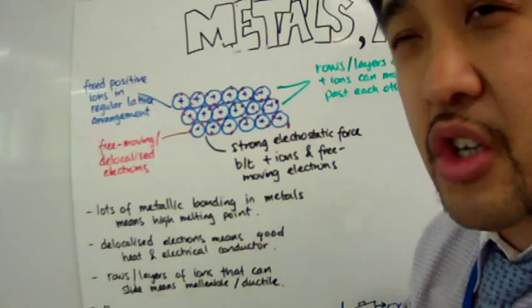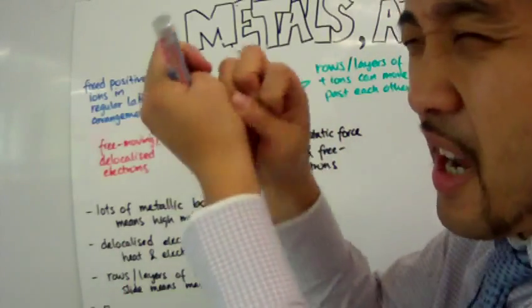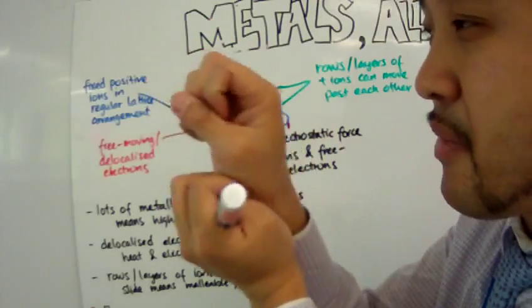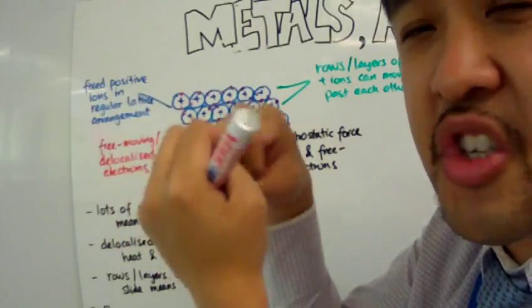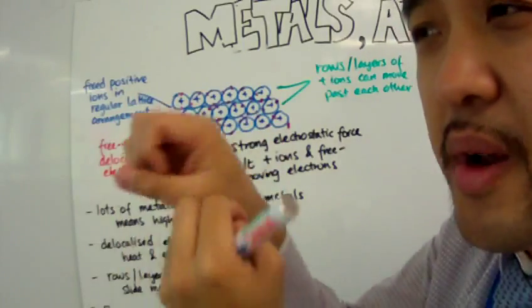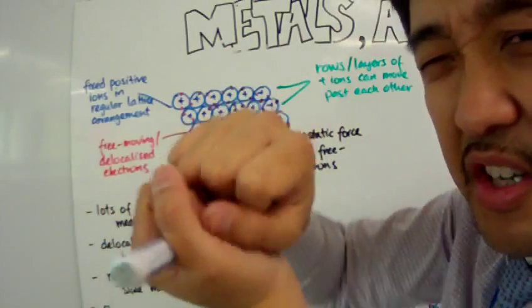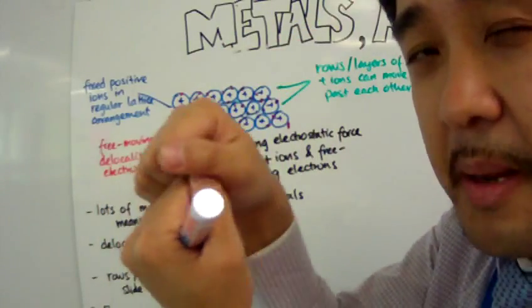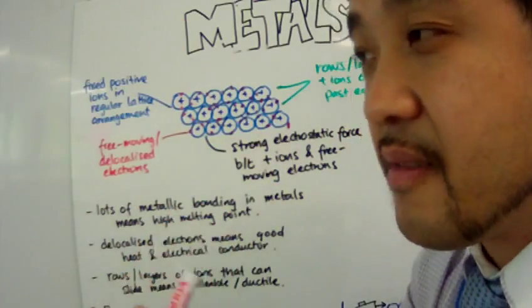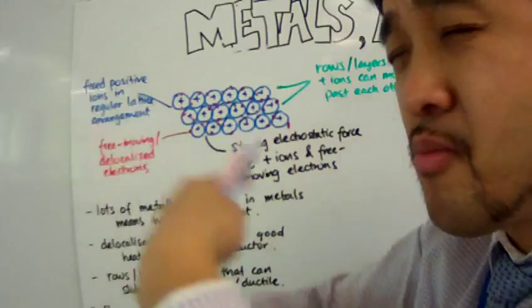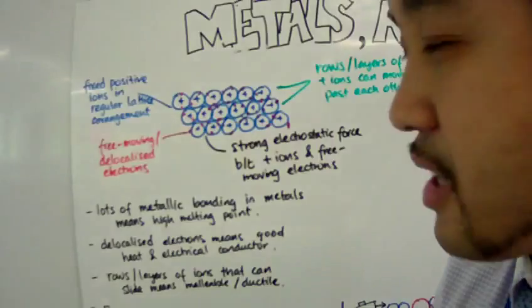In the molten state, the positive ions are less rigidly fixed — they're not separated; they're still closely packed, but they can slide past each other. The delocalized electrons can still move around those positive ions and jump around everywhere, which is why molten metals also conduct electricity.